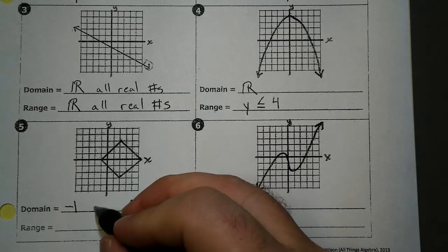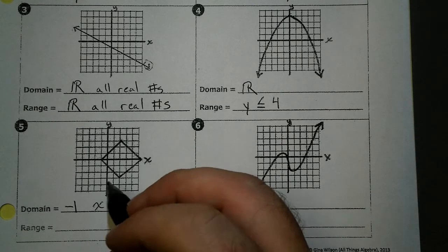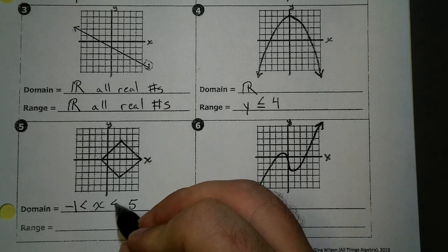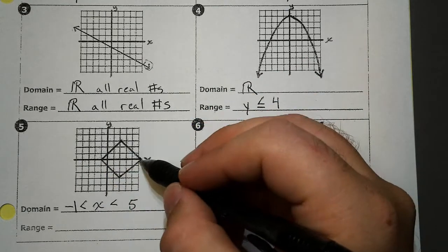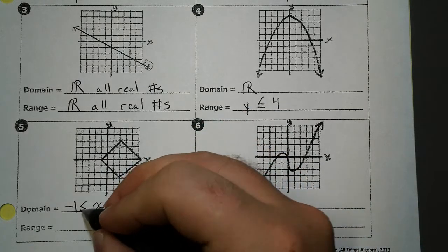Domain is comparing x values, and as long as you put your lowest number over here and your biggest number over there, your symbols are always going to go like this. Now these are included because they're part of the graph, so both of these get underlined.